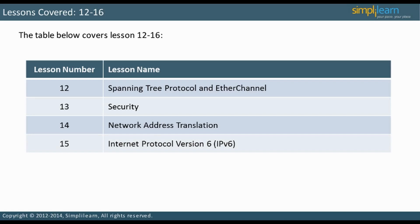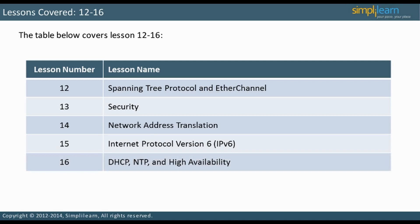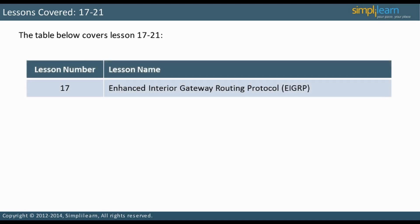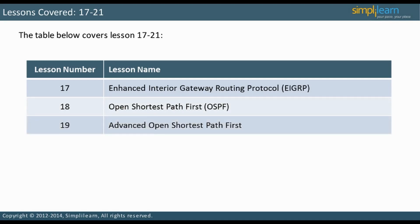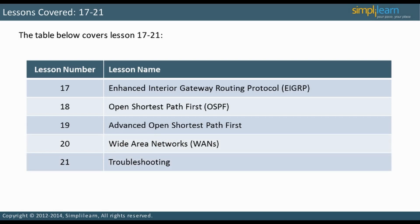In Lesson 15, Internet Protocol Version 6 addressing will be discussed. Lesson 16 will present DHCP, NTP, and High Availability. Enhanced Interior Gateway Routing Protocol (EIGRP) is the topic for Lesson 17. Lesson 18 will discuss the Open Shortest Path First (OSPF) Routing Protocol. Lesson 19 deals with advanced topics in OSPF, which is multi-area OSPF. The subject of Lesson 20 is Wide Area Networks (WANs), and Lesson 21 will address Troubleshooting.